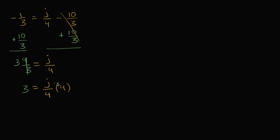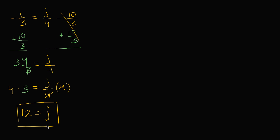But I can't just multiply the right hand side by 4 — I have to do it to the left hand side as well. So I'll multiply the left hand side by 4 as well. 4 times 3 is 12, and j divided by 4 times 4 is just j. So we get j is equal to 12.